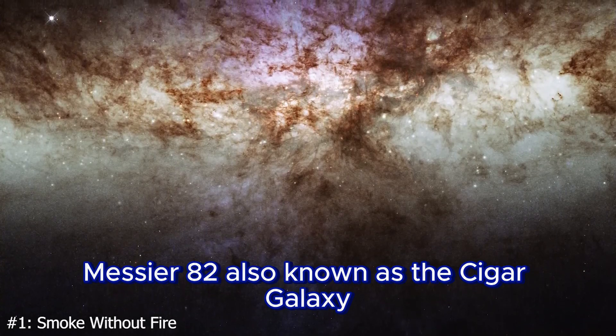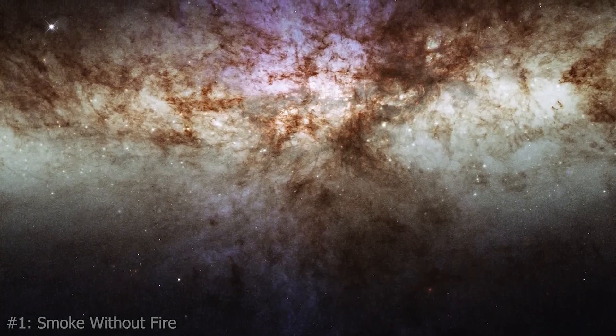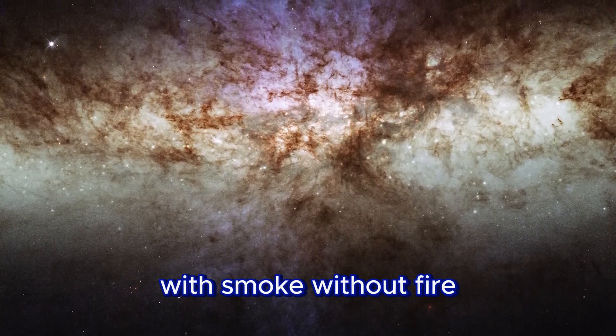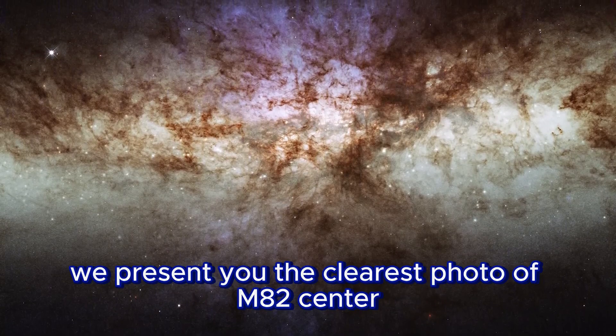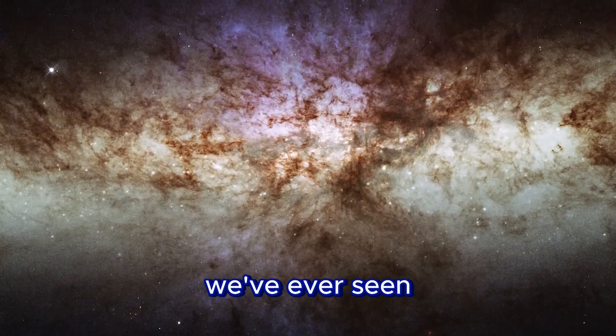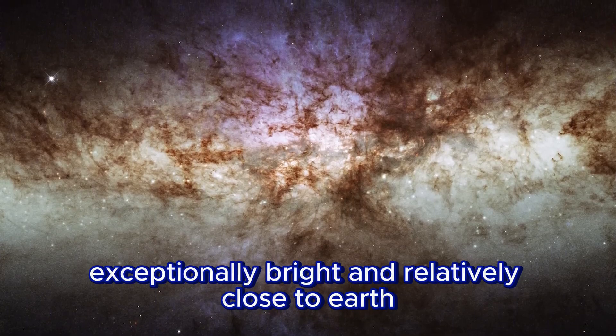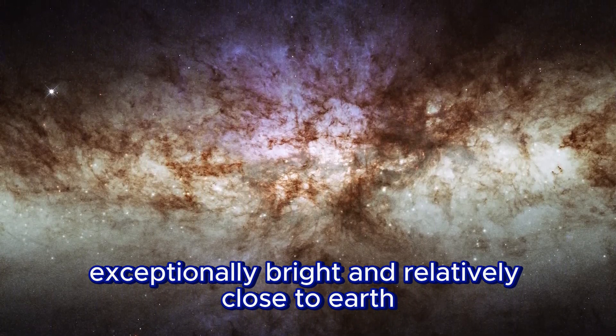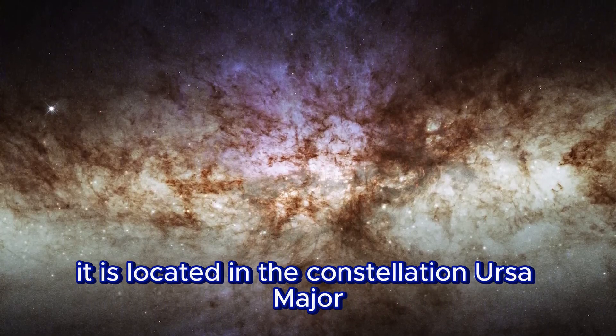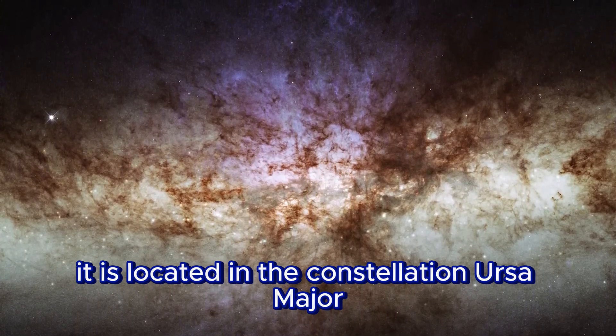Messier 82, also known as the Cigar Galaxy, is famed as the number one starburst galaxy with smoke without fire. We present you the clearest photo of M82's center we've ever seen. Exceptionally bright and relatively close to Earth at about 12 million light years away, it is located in the constellation Ursa Major.